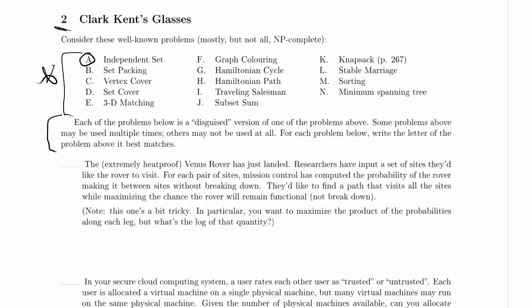I'll give an example of the optimization version for independent set, and Hamiltonian cycle is another good example of that. In independent set, you're given a graph and a threshold value k, and you want to figure out if there is a set of at least k nodes such that no two of those nodes is connected by an edge in the graph.